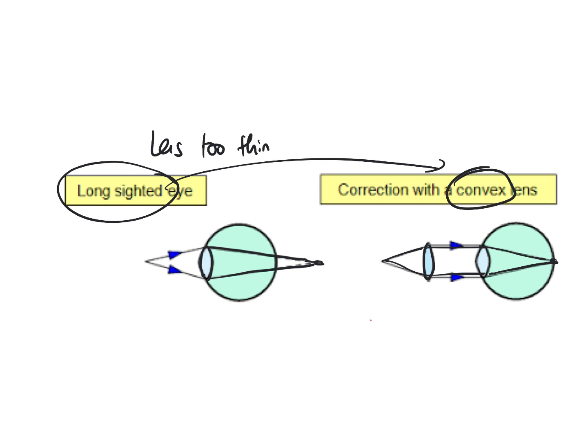In the exam, you'd be expected to potentially draw or sketch these ray diagrams showing what the lens does. And you definitely need to know how you fix each long-sighted and short-sighted with which lens, convex or concave. It's better if you understand how the eye works, then it's easier to answer those questions. Thanks for watching.